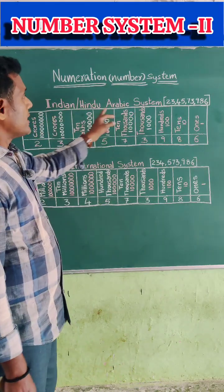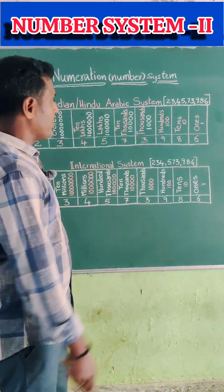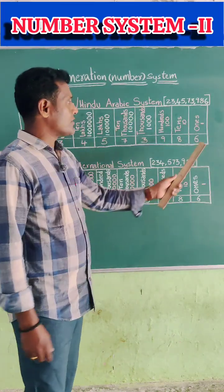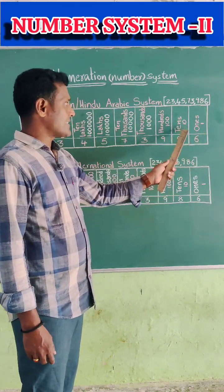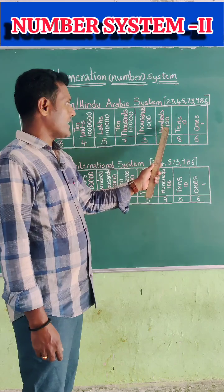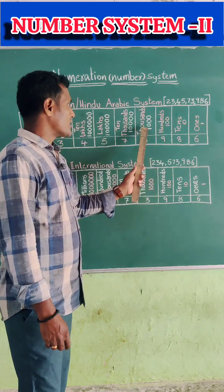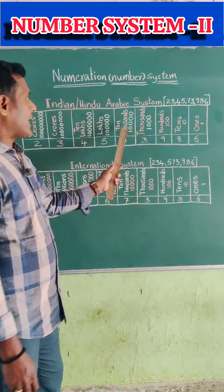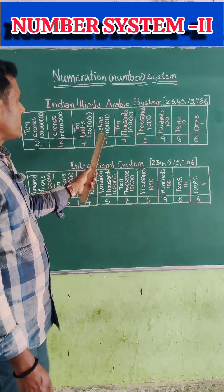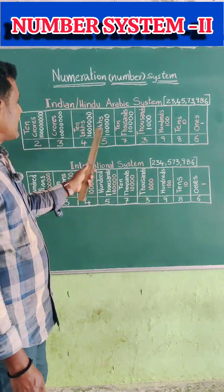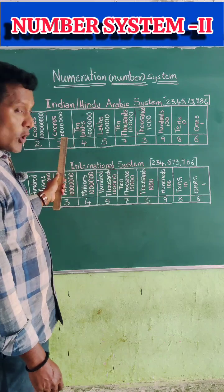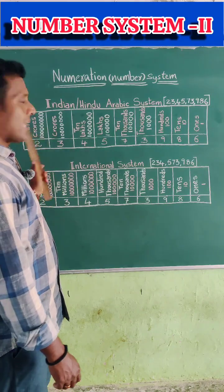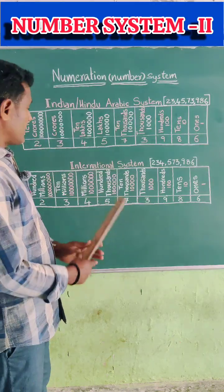According to the Hindu Arabic system, the place values are ones, tens, hundreds, thousands, ten thousands, lakhs, ten lakhs, crores, ten crores.